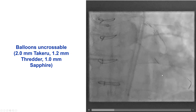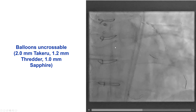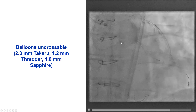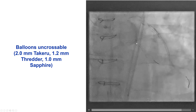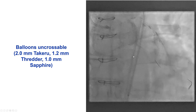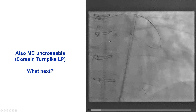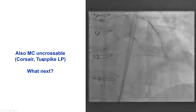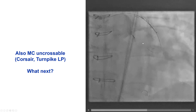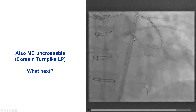At this point we thought the challenging part was over and now it would just be balloon and stenting. However, we faced the exact same problem antegrade — we could not advance even small balloons through the proximal cap. We tried a 1.0 Sapphire, a Threader, a 2.0 mm Takeru, and nothing would go through. We also tried antegrade microcatheters — a Corsair as well as a Turnpike LP — but once again nothing would go through. There is significant calcification and also possibly some interaction with the previously placed circumflex stent.